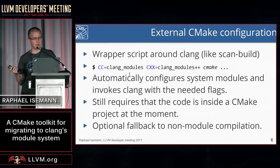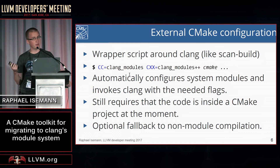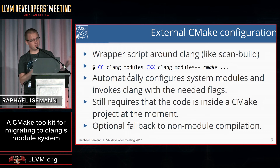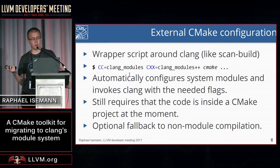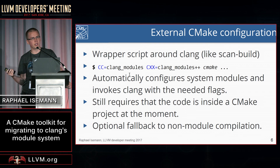The other way — and this is a bit experimental — is you can actually use this externally. We have a wrapper script that you can pass as the C++ compiler. You pass it to CMake, and if CMake calls it, we actually generate on the fly the modules for your system libraries, and you get the same effect that we compile all the system libraries with C++ modules. It also has some other small utilities in there, like a fallback to non-module compilation if you hit one of the rare module bugs, so you don't have to disable modules just to handle one translation unit that doesn't compile with modules.